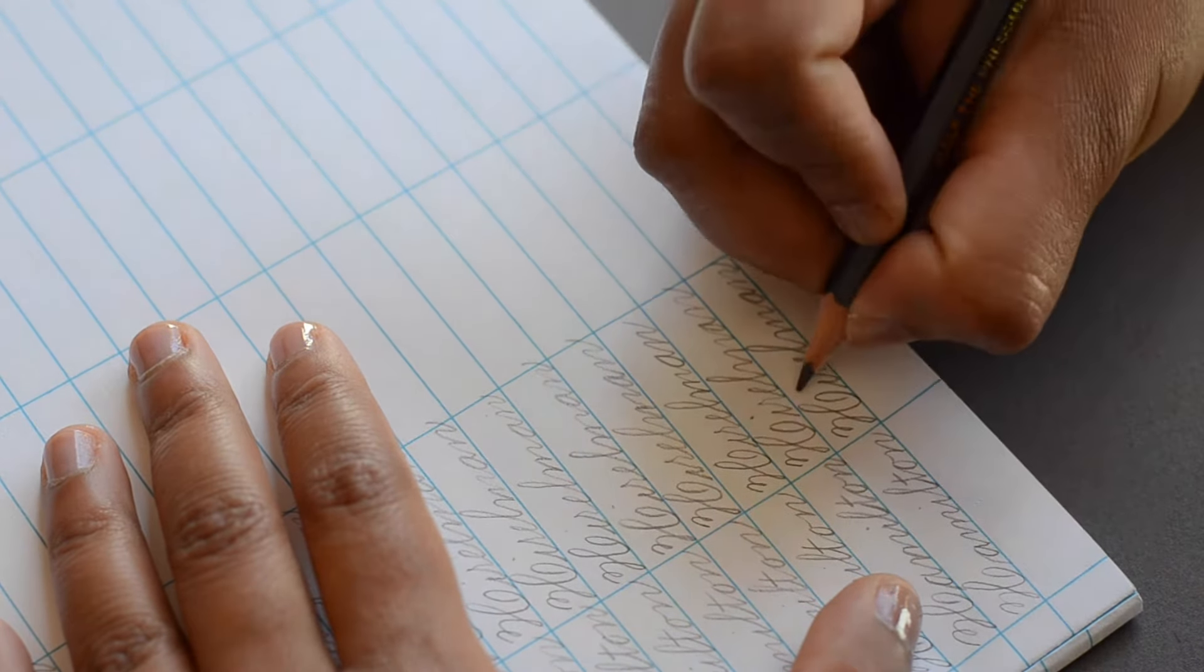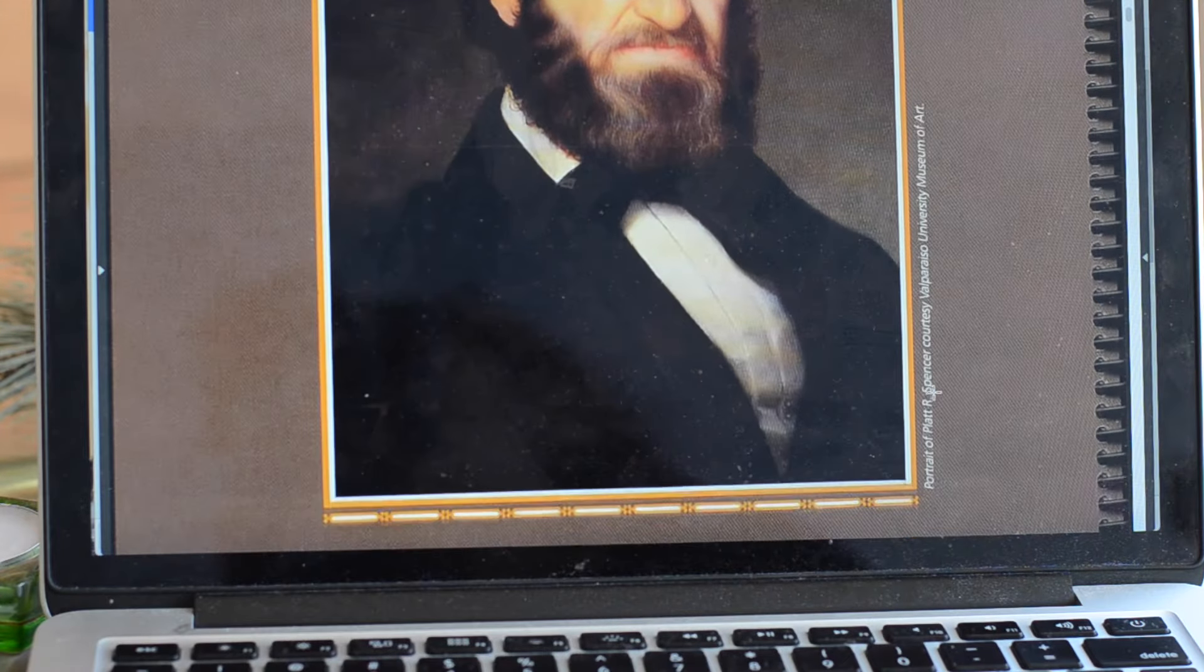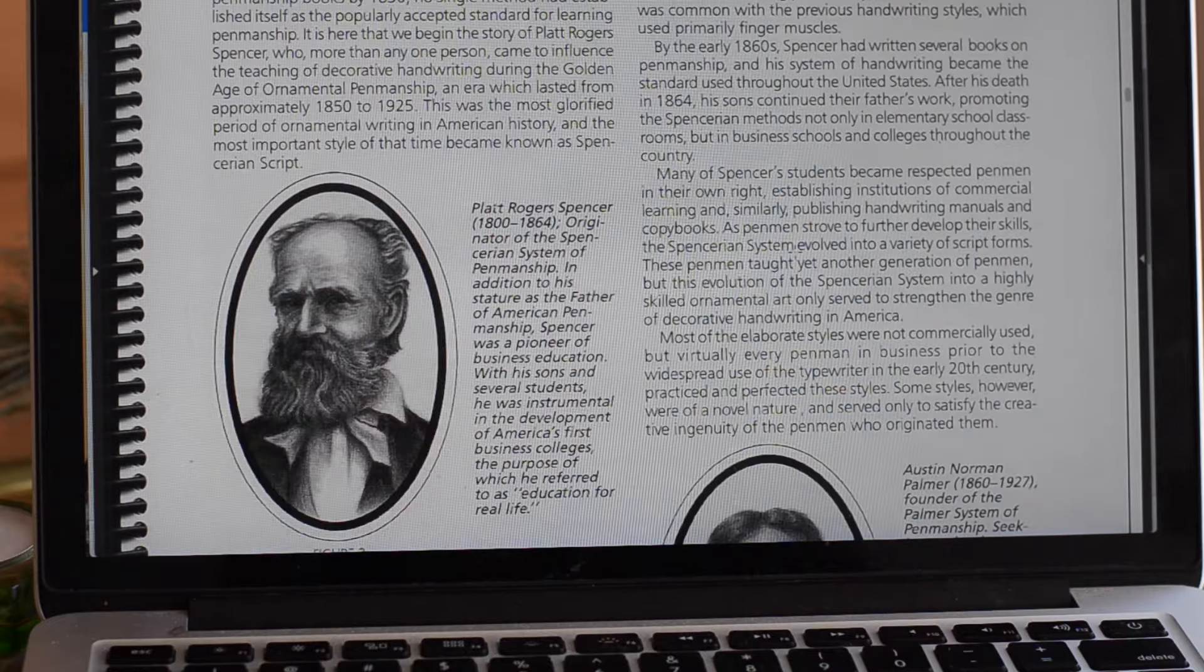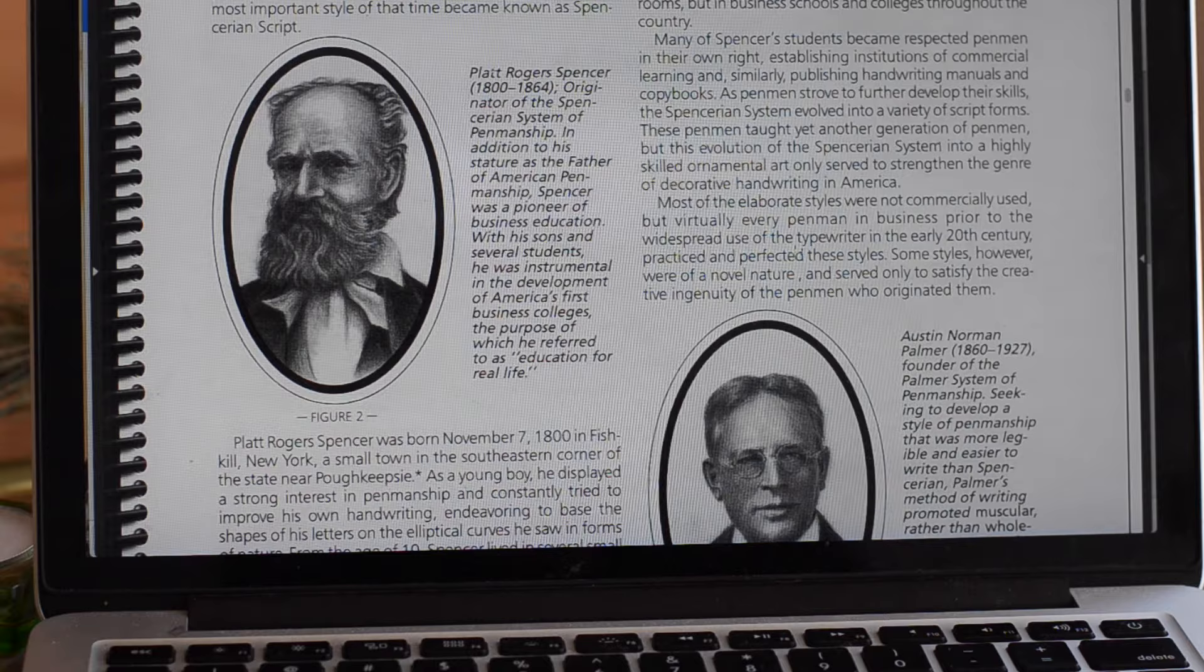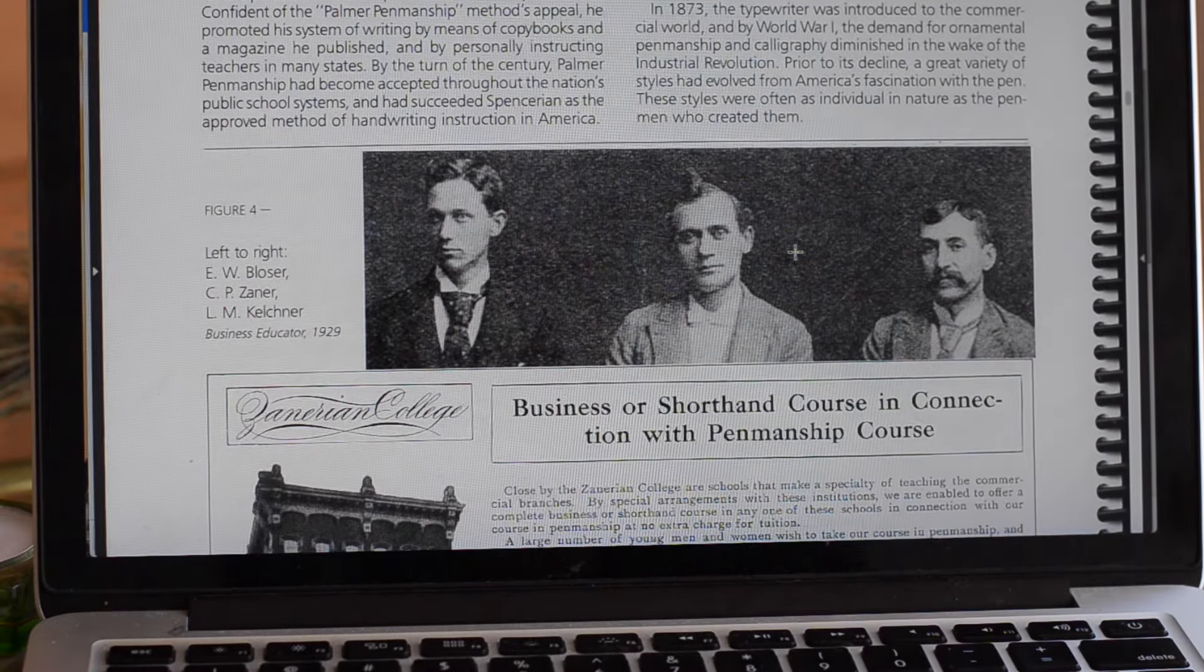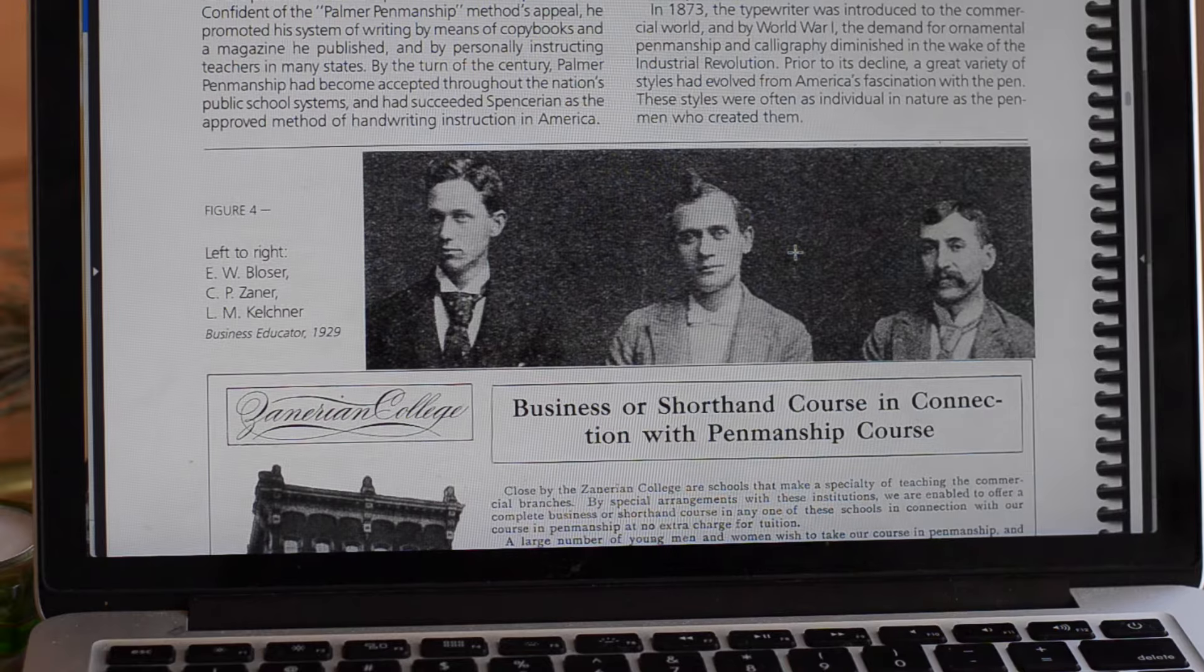So Spencerian is named after Platt Rogers Spencer who lived in the 19th century and was really into writing and nature. Basically Spencerian is based on a system of ovals. I'm scrolling through a really thorough book Michael Sahl has written on the history of Spencerian that I'm going to link in the description below in case you're interested.